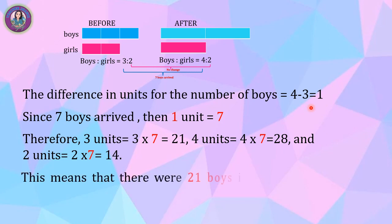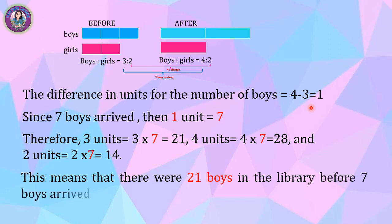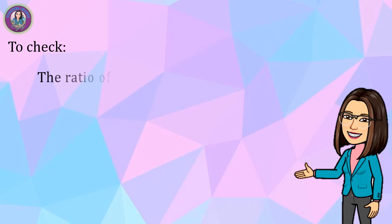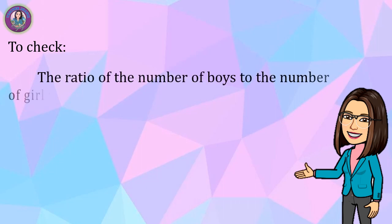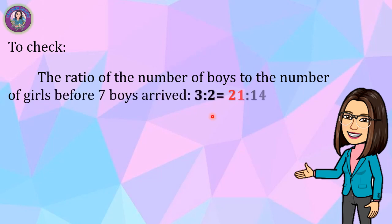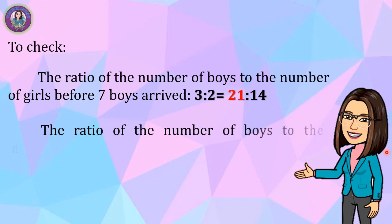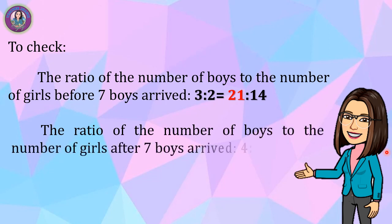This means there were 21 boys in the library before seven boys arrived. To check: the ratio of boys to girls before seven boys arrived is 3 to 2, equivalent to 21 to 14. After seven boys arrived, the ratio is 4 to 2, equivalent to 28 to 14. Since 28 minus 21 equals 7, our answer makes sense.